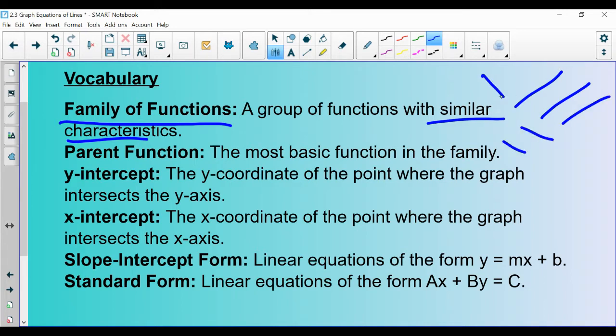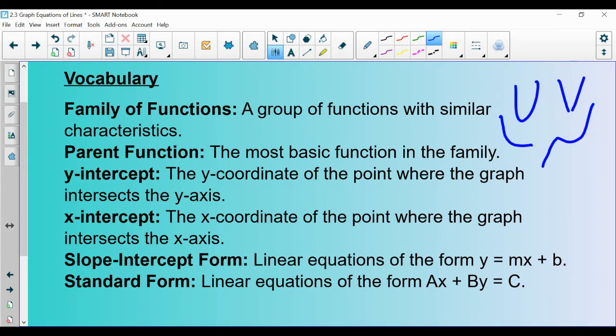So the type of function that we're looking at in section 2.3 is going to be called the linear family, which basically just means that when you graph them, they make lines. I'm trying to make straight lines here. They don't have to be straight up and down or straight horizontal, but just some sort of line. We are going to study plenty of other families this year.